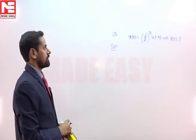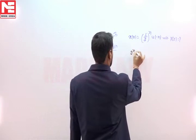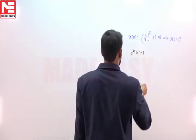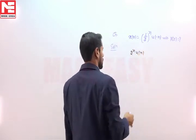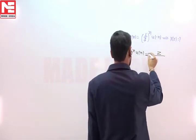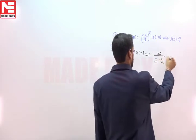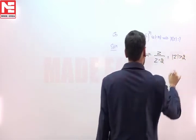In the next question we have to obtain Z transform for given signal. Suppose we want to calculate Z transform of this signal, then Z transform of 2^n * u(n) will be equal to Z/(Z-2) with ROC |Z| > 2.